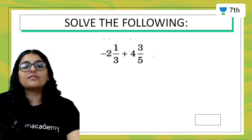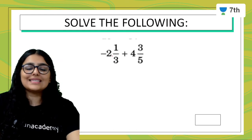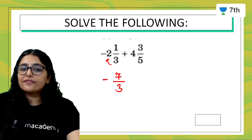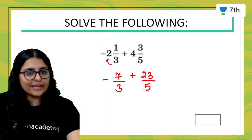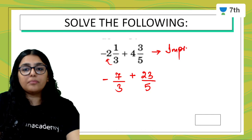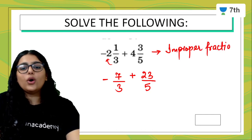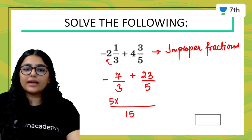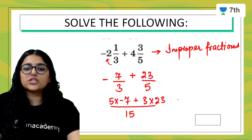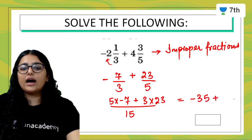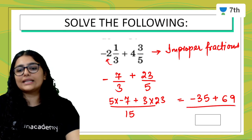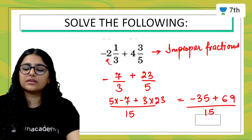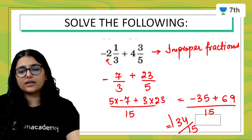Solve the following given in mixed fractions. Convert to improper fractions: 3 and 1 third becomes 3 times 3 plus 1 over 3, which is 7 by 3. The second number with negative sign: 4 and 3 fifths becomes 5 times 4 plus 3 over 5, which is minus 23 upon 5. Now make the denominator same: LCM of 3 and 5 is 15. This gives 5 times 7 plus 3 times minus 23 upon 15, which is 35 minus 69 — wait, that is minus 35 plus 69 equals 34 upon 15.